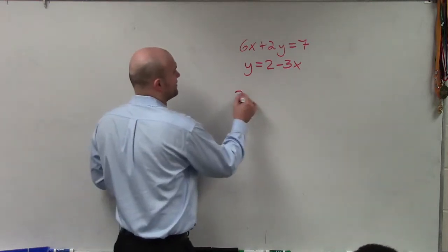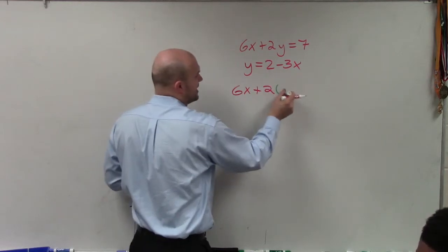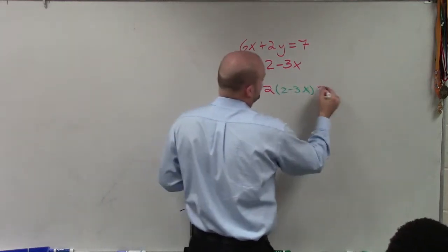So in this case, I'll have 6x plus 2 times y. Well, y is equal to 2 minus 3x, and that's equal to 7.